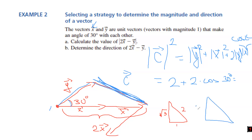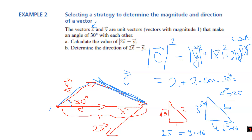Now you know how to use addition, subtraction, and multiplication by scalar together in a single task. Here we practiced all of them to solve a triangle constructed by vectors. In today's class, you learned that vectors have direction and you understood how this direction can be impacted by scalar multiplication.